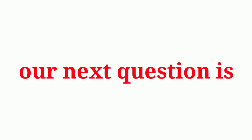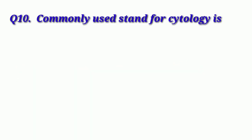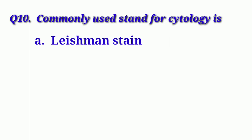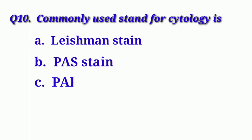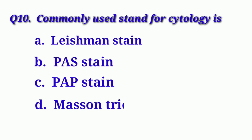Our next question is: The commonly used stain for cytology is. Option A: Leishman stain. Option B: PAS stain. Option C: Pap stain. Option D: Masson-trichrome stain.